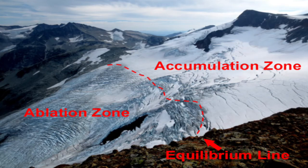In the accumulation zone, the glacier will keep growing. As a glacier comes farther down a mountain, it will warm up. The equilibrium line is where the ice starts melting faster than it accumulates.